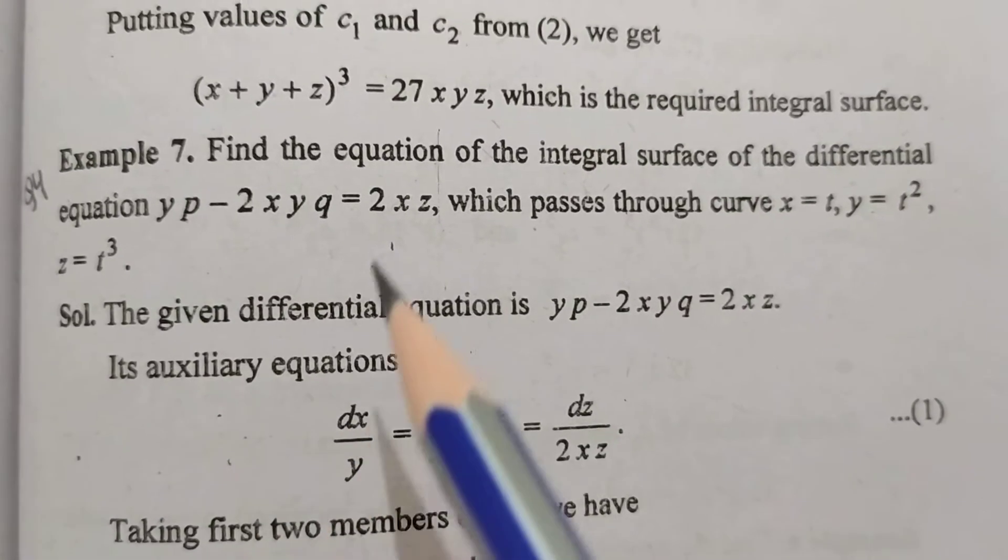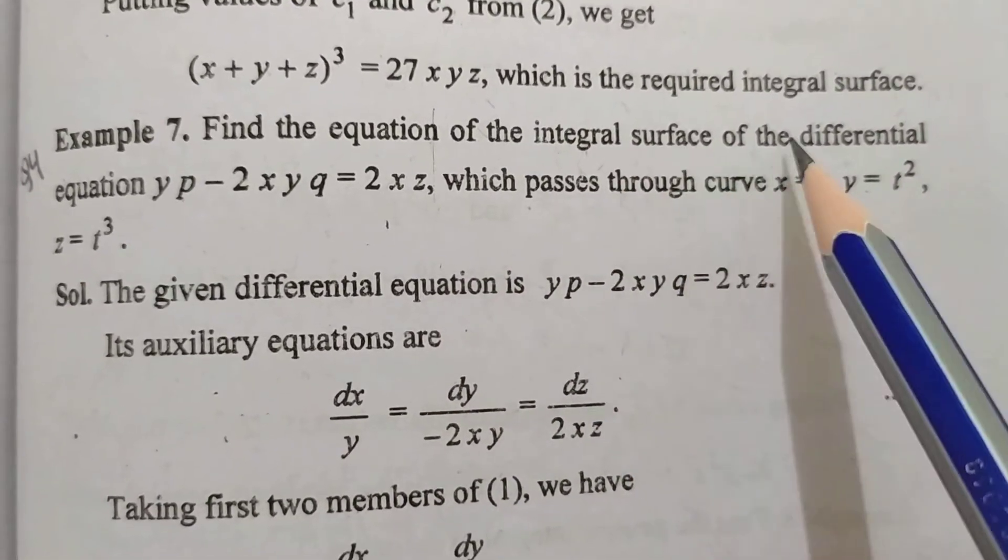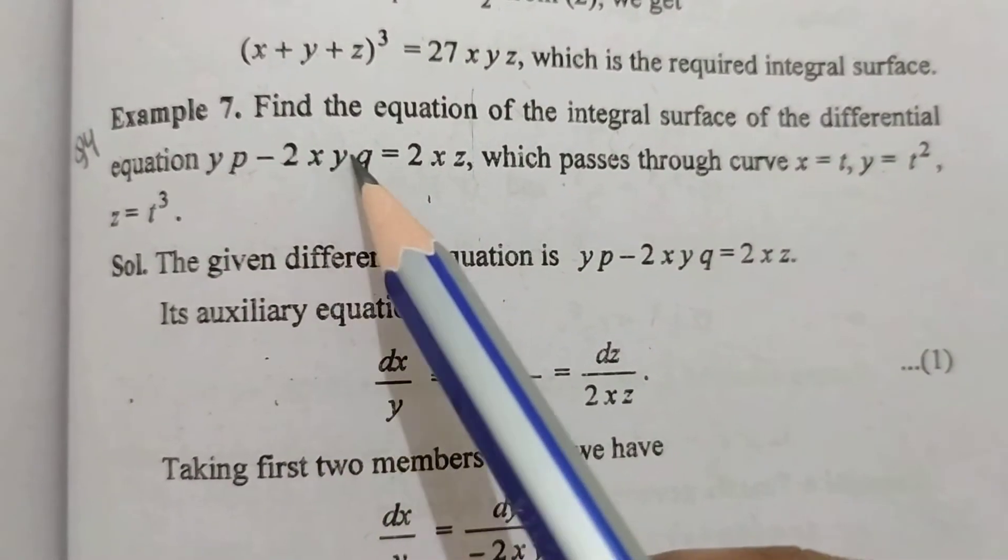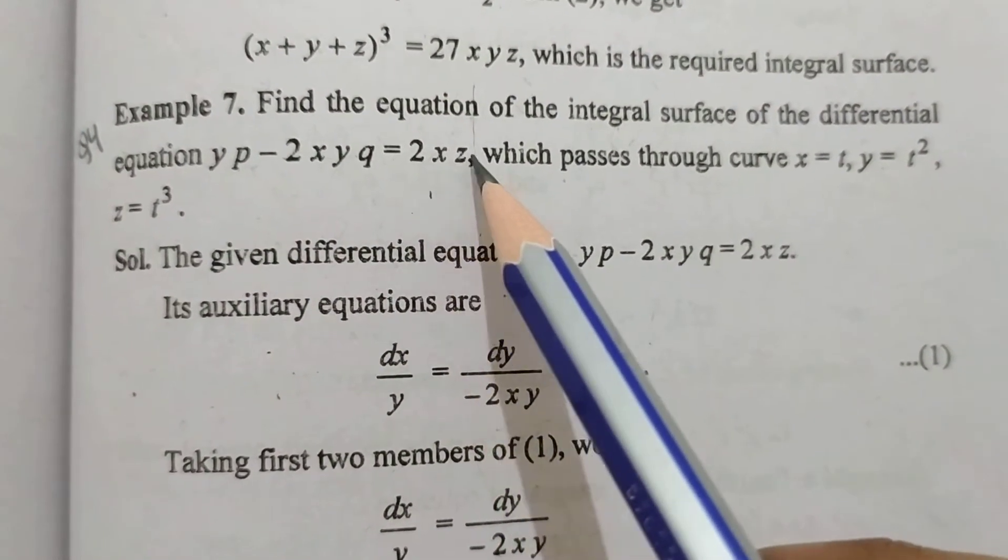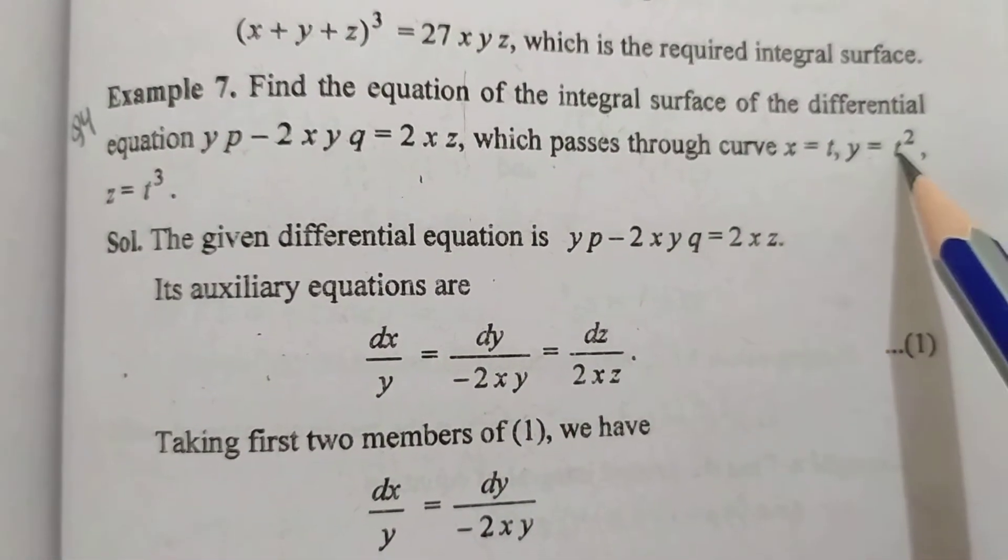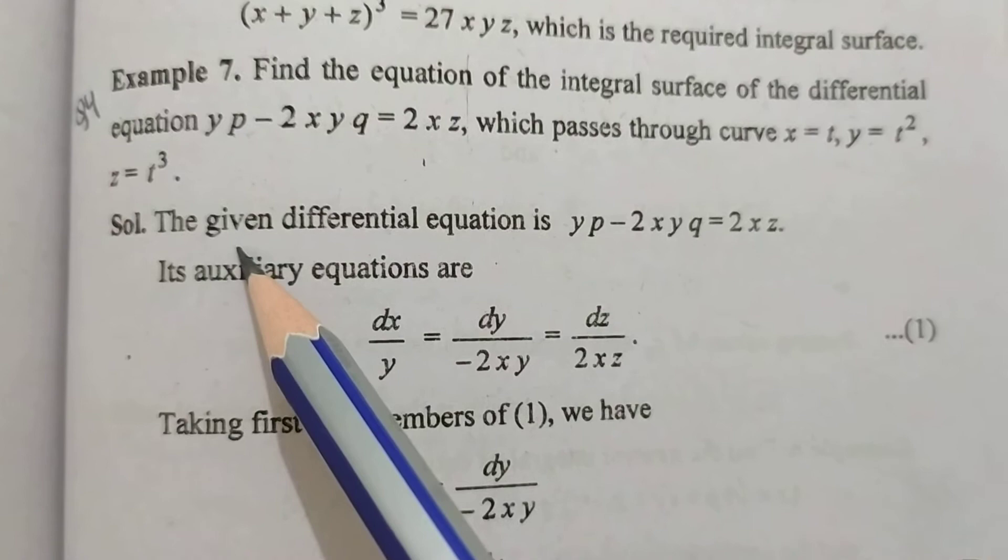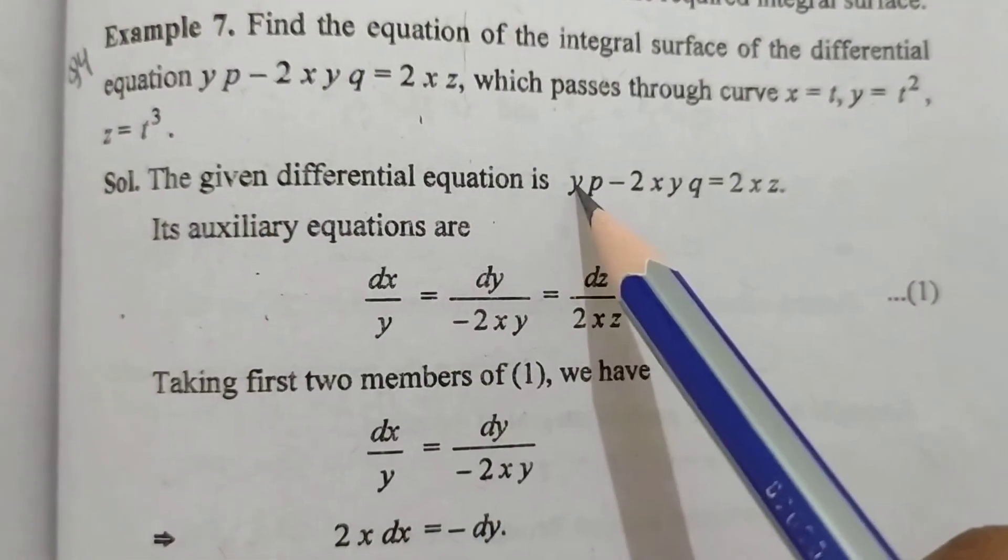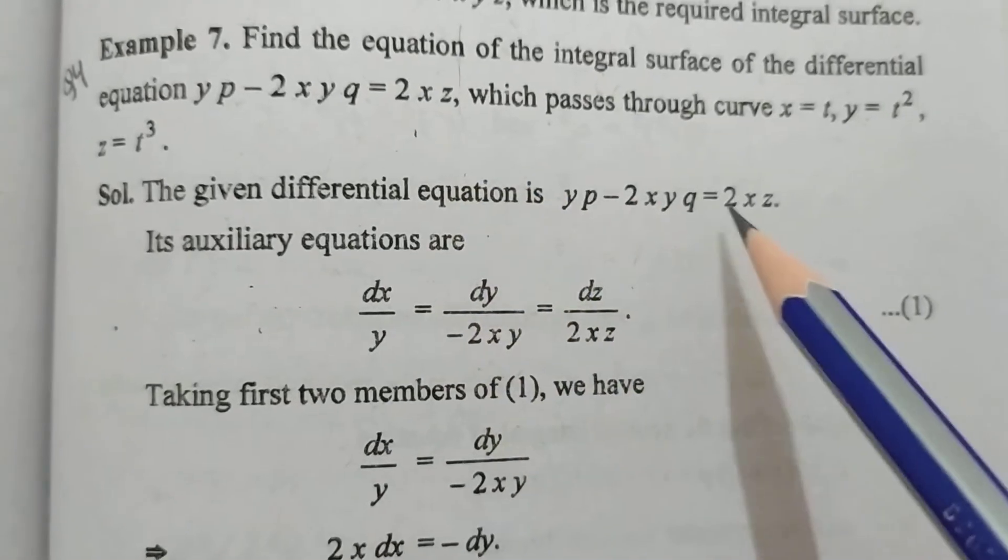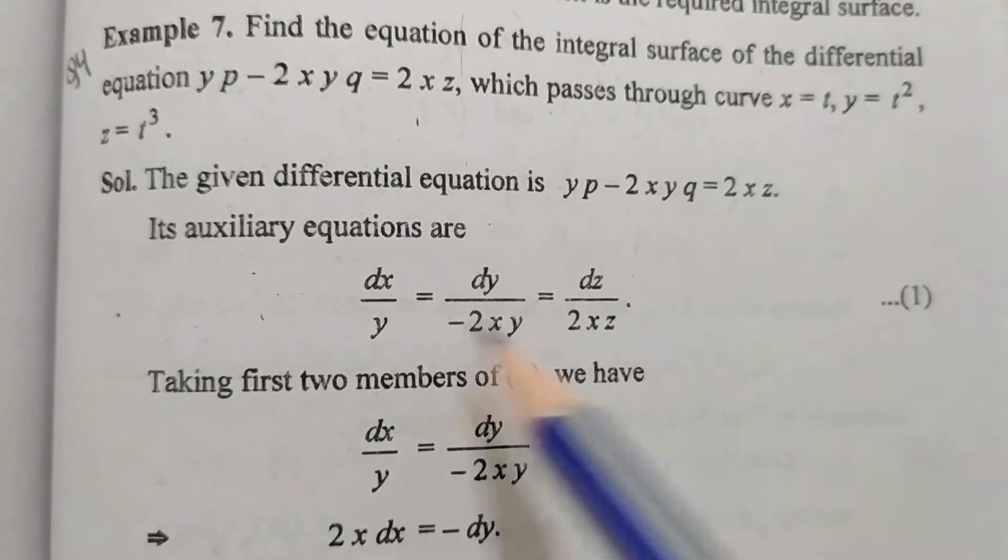Question 4. Find the equation of integral surface of differential equation yp minus 2xyq is equal to 2xz which passes through x is equal to t, y is equal to t square, z is equal to t cube. Given differential equation is yp minus 2xyq is equal to 2xz.